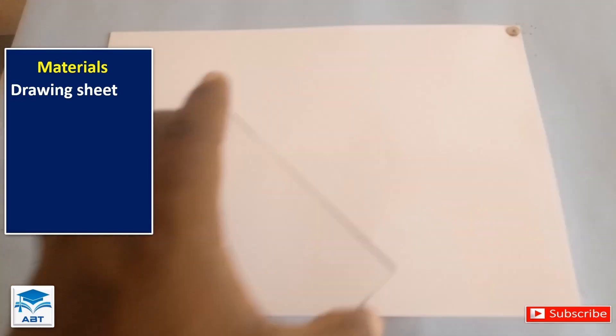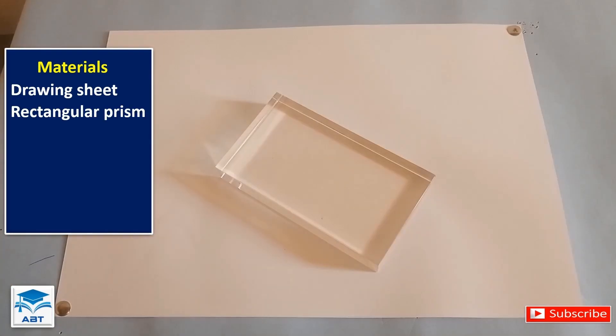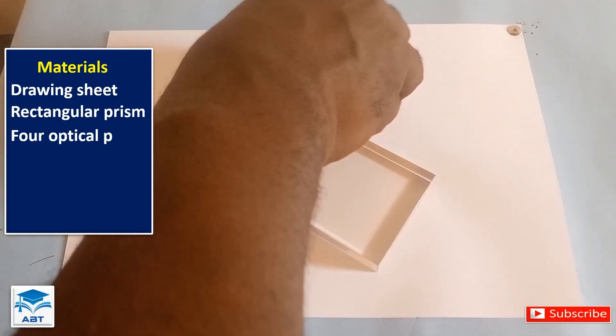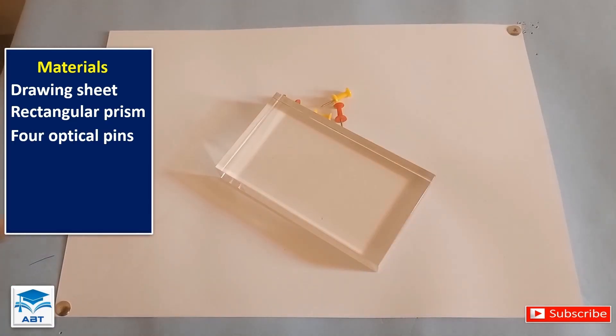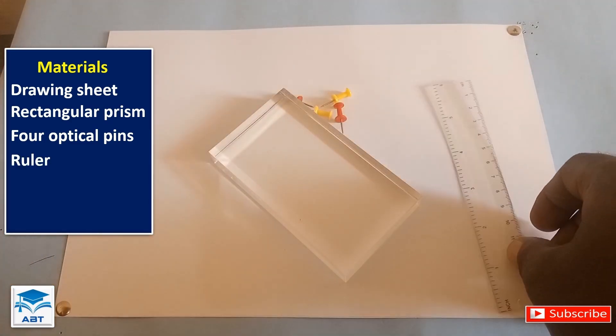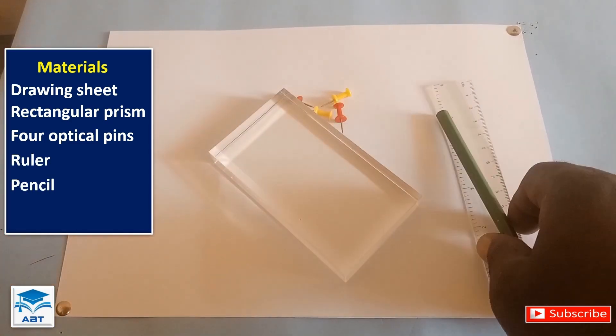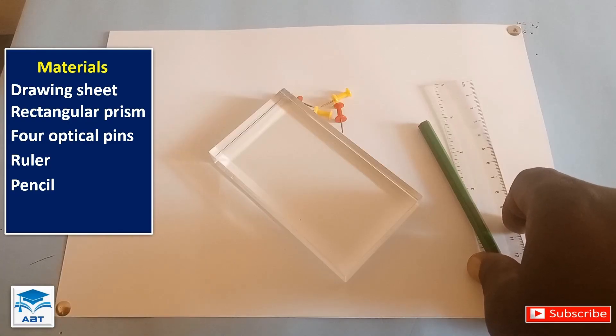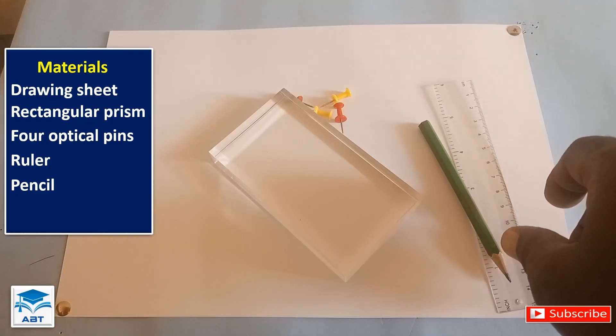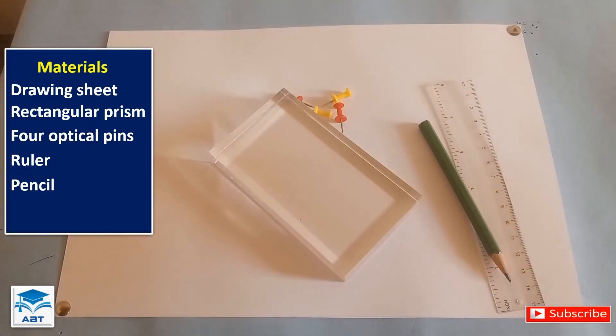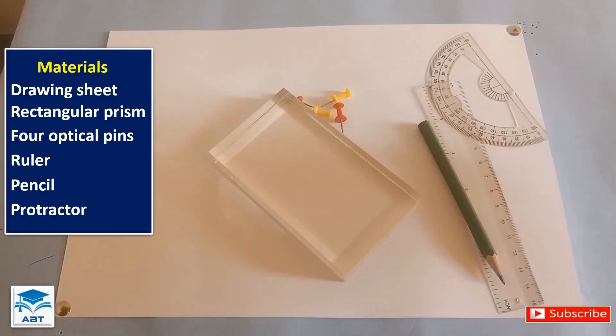The materials needed for this experiment are drawing sheets, rectangular prism, four optical pins, ruler, pencil and a protractor.